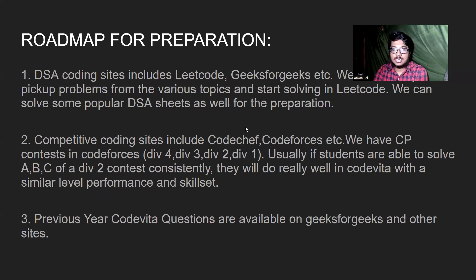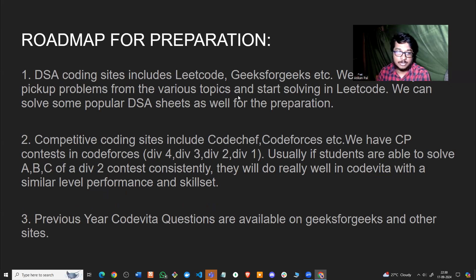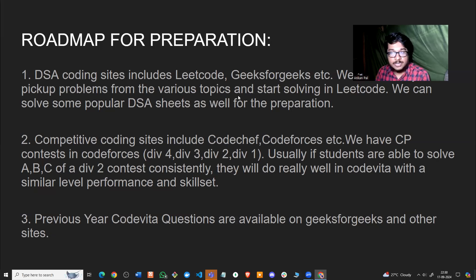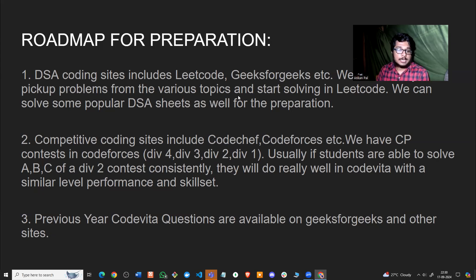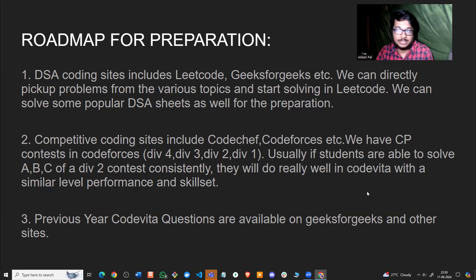Coming to preparation: we are mainly concerned with getting offers — TCS Ninja, Digital, or Prime. In the pre-qualifier round, the first three questions are on the easier side and the last three are on the tougher competitive programming side. For DSA practice, we can use popular coding platforms like LeetCode and GeeksforGeeks. Start by getting comfortable with C++ STL or Java Collections Framework, then pick up a topic on LeetCode and solve easy, medium, and hard problems progressively.